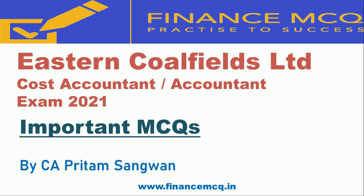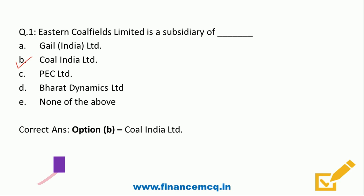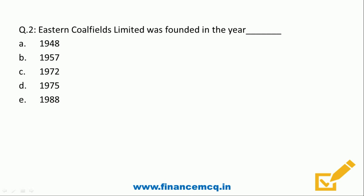Welcome to Finance MCQ. Today we will discuss some important MCQs related to Eastern Coalfields Limited cost accountant exam 2021. First question: Eastern Coalfields Limited is a subsidiary of which company? Options: a) GAIL India, b) Coal India, c) PEC Limited, d) Bharat Dynamics Limited, e) None of the above. The correct answer is option B - Coal India. ECL is a subsidiary of Coal India.